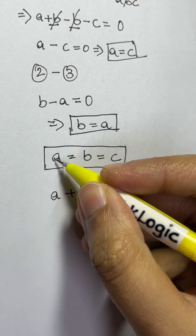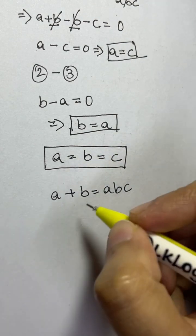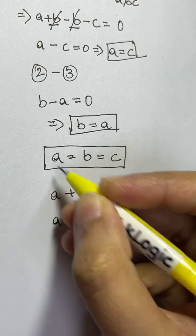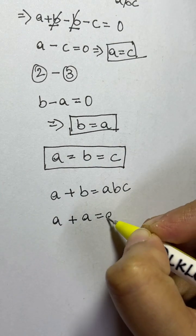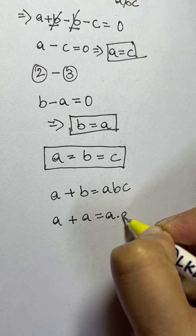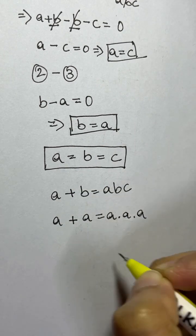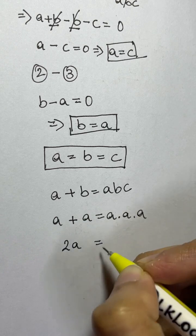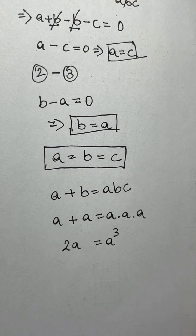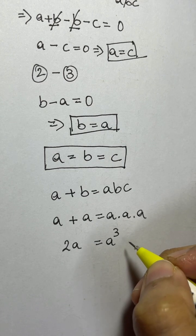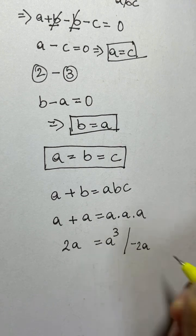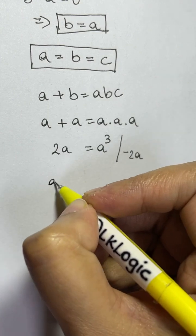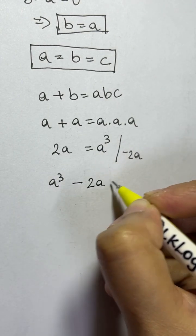Since b is equal to a and c is equal to a, we replace all variables with a. So a plus a is 2a, and a times a times a is a cubed. Now subtract 2a from both sides, giving us a cubed minus 2a equals zero.